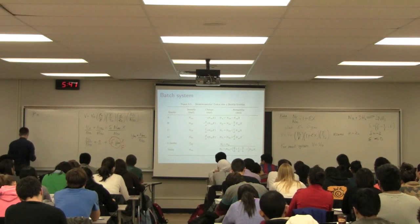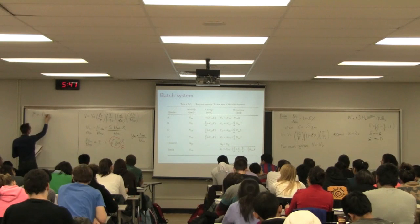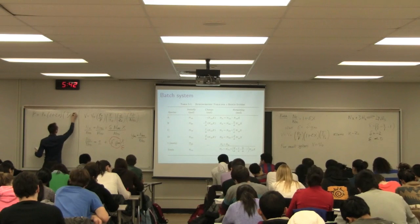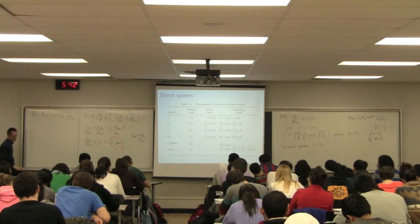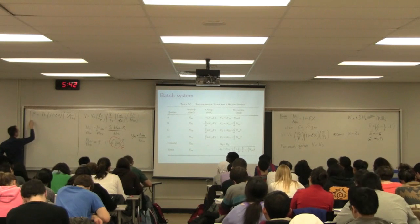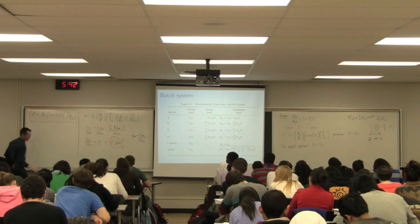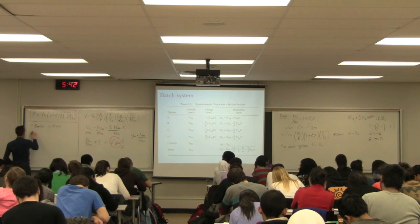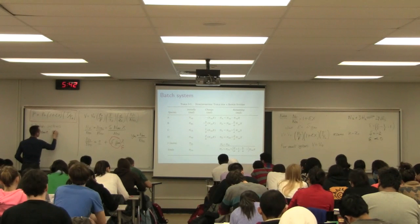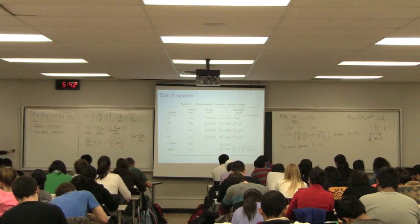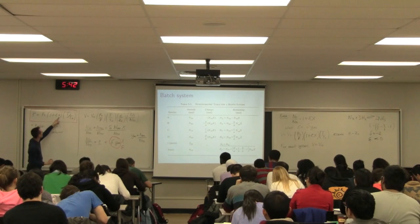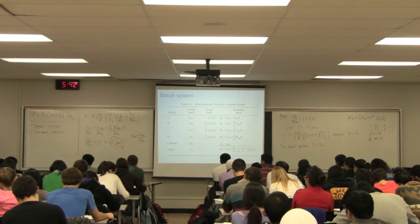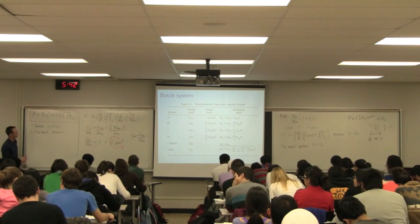I can rearrange for P: the total pressure equals the initial pressure P₀ times (1 + ε × X) times (T/T₀). This is probably the most important equation for a batch system. It tells me how my pressure will change at any point along the reaction — from zero conversion (X = 0) up to final conversion X — and I can predict what my pressure in that closed reactor is going to be. This is a critical equation.